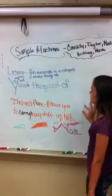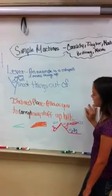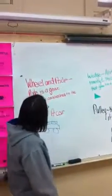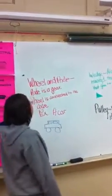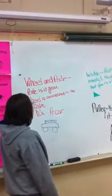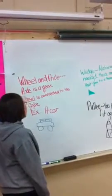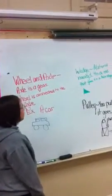An inclined plane allows you to carry heavy stuff uphill. A wheel and axle is a gear — the wheel is connected to the axle, like a car.